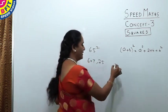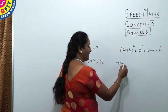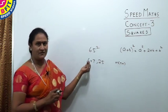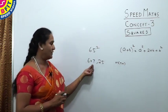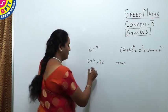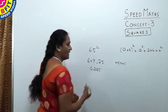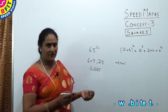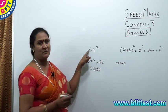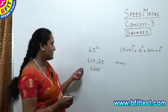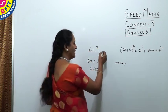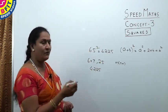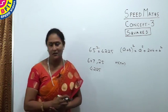Suppose the leading digit is n; the remaining part is n × (n+1), consecutive numbers. For 65, you have 6, so multiply 6 by its following number: 6 × 7 = 42. So 65² = 4225. Whenever a number ends with 5, write the last two digits as 25, and multiply the remaining digit by its following number.